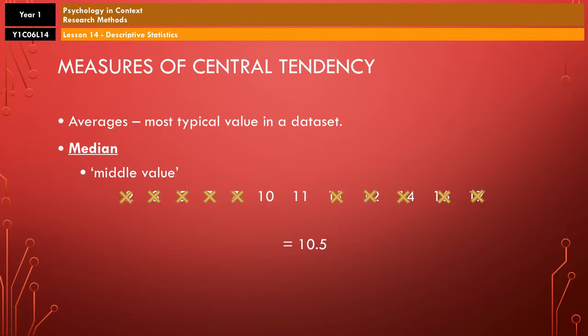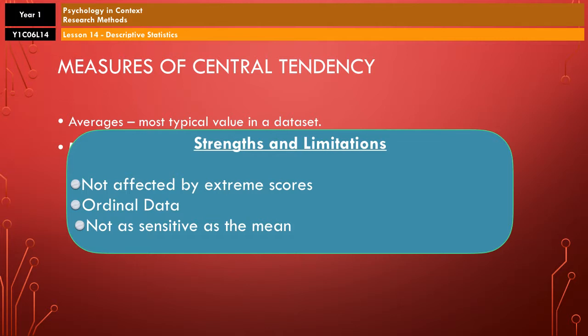The median can be used with interval data, it can be used with ratio data, and it can also be used with ordinal data as well. Now, the good thing about the median is that it's not affected by extreme scores. So, if you think back to your example with how much people earn in a particular company, the median would not be thrown off by that 95 and 85 value at one end. The downside is, of course, that it isn't as sensitive as the mean, although in some situations, that would be an upside as well.